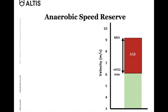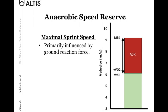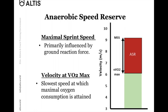So what is anaerobic speed reserve? It's a range of two different speeds. At the top end, we have maximal sprint speed. Within the studies, this was tested using a 50-meter sprint test from a standing start, and it's primarily influenced by ground reaction force. On the bottom end of the range, we have velocity of VO2 max — the slowest speed at which maximal oxygen consumption is attained.